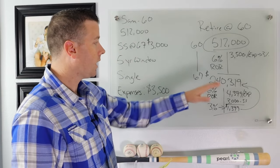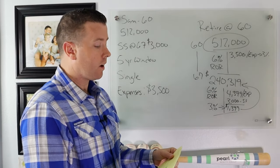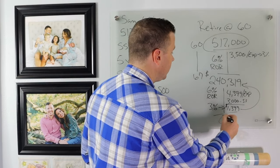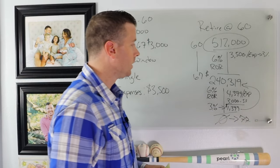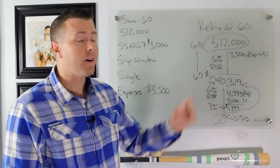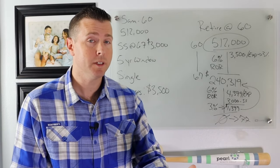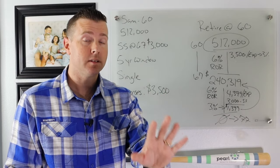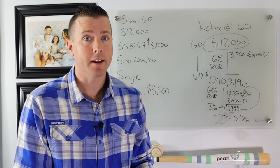So now we look at this and say, okay, how long is this going to last? And unfortunately, we are out of money or at zero at 77 years old. So we look at this and say, can I retire at 60 with $500,000 saved for retirement with $3,500 in expenses waiting to 67 to collect Social Security? And the answer is, unfortunately, no, you can't.